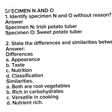Specimens N and O: number one, identify Specimen N and O without reason — Specimen N is an Irish potato tuber; Specimen O is a sweet potato tuber. You may be asked for differences and similarities between both. Differences: appearance, taste, nutrition, and classification. Similarities: both are root vegetables, both are rich in carbohydrates, both are versatile in cooking, and both are nutrient-rich.